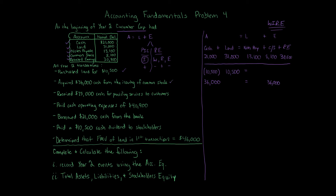Transaction 3: Received $75,000 cash for providing services to customers. Cash goes up by $75,000. No effect to Land, Notes Payable, or Common Stock. For Retained Earnings, remember WIRE — this is revenue. Revenue increases retained earnings, so we put $75,000 increase to Retained Earnings. It balances. Anytime retained earnings is affected, I'll note the specific account in a side column — in this case, the Revenue account.